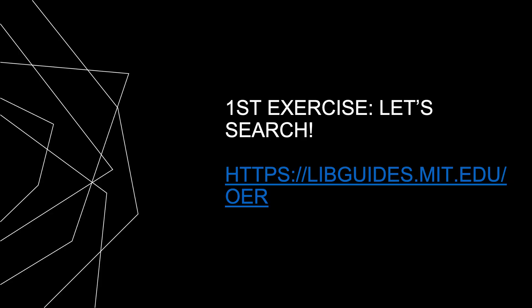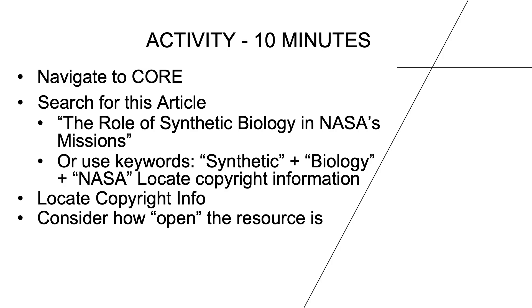So now that we know all this, we can engage with the resource guide in an activity and put everything into action. The first activity is a simple search for a specific OER article in the Core online database. The purpose is to find the copyright information related to the article and then examine how open the article is — it's important to know the difference between Open Access and Open License. Navigate to Core and search for this article: 'The role of synthetic biology in NASA's missions,' or use the keywords synthetic + biology + NASA. Once you find the article, locate any copyright information you can spot. If you get stuck, you can find a direct link to the article by clicking Download from Data Provider.